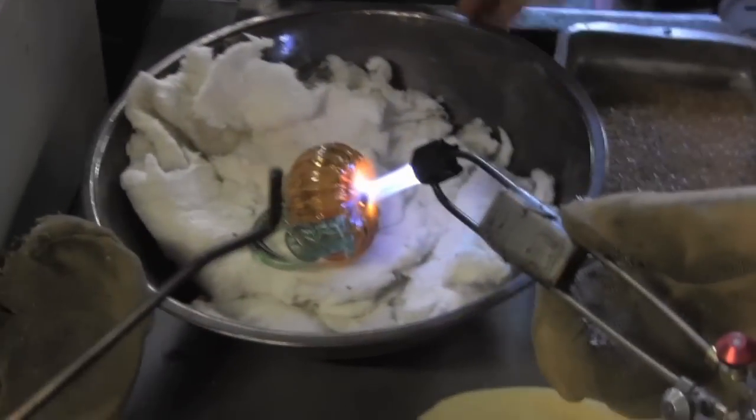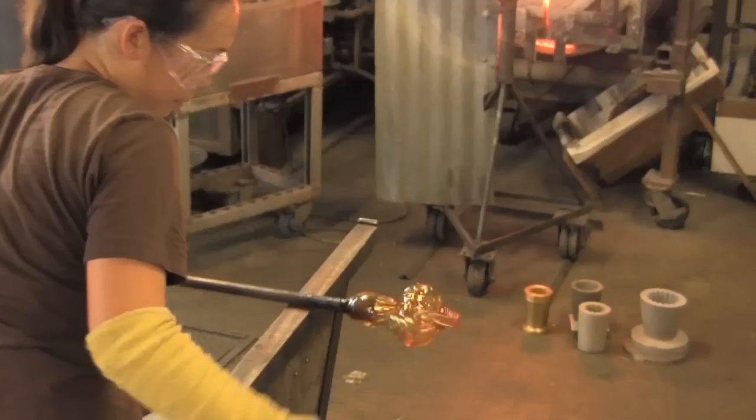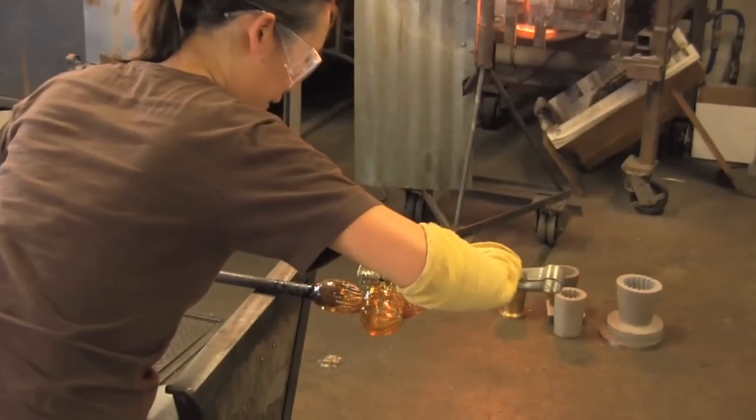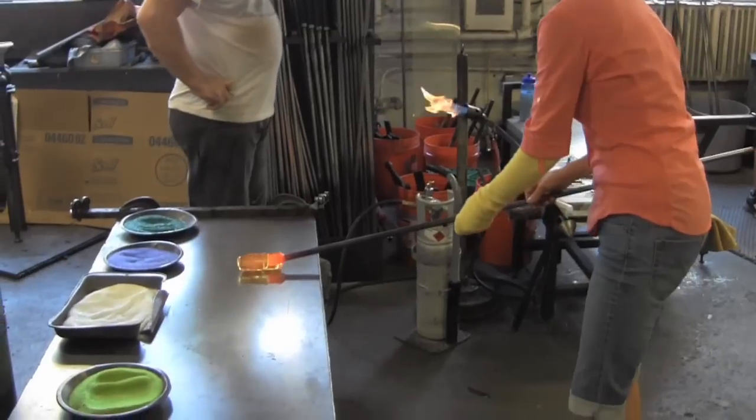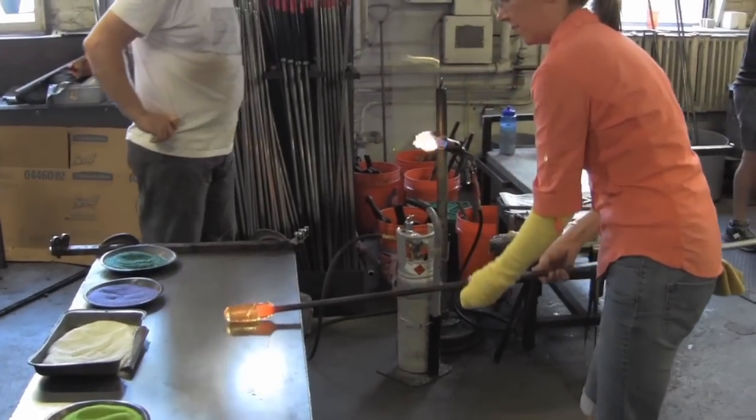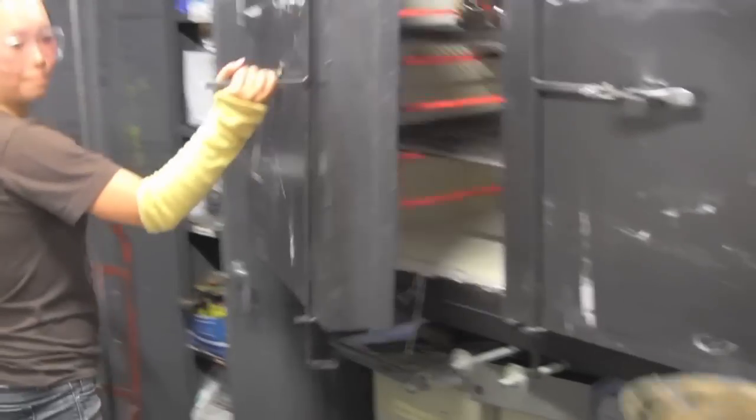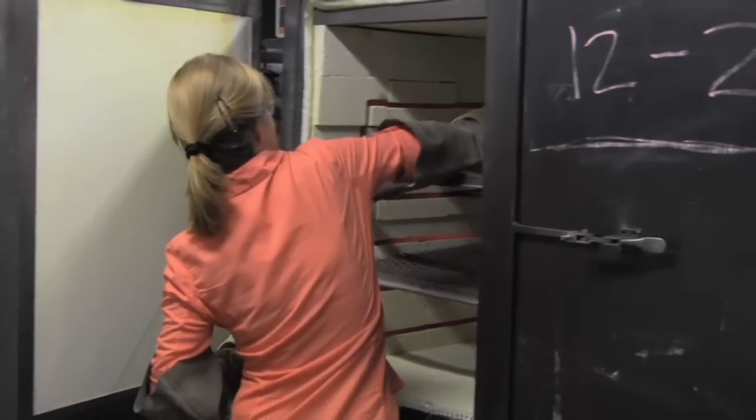The Prince Rupert's drop is a great example of the impact the materials processing can have on its properties. In particular, we showed how you can turn a normally brittle glass into a tough, fracture-resistant one. Manipulating a material so that it has extraordinary properties is all in a day's work for a materials engineer.